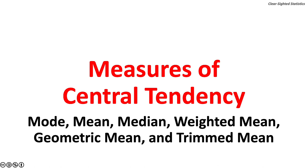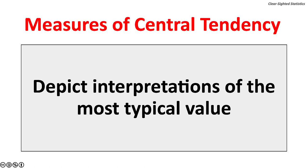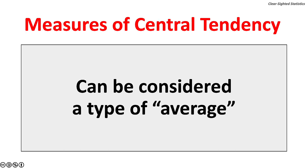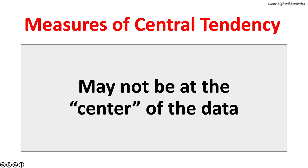Let's turn to the six basic measures of central tendency: the mode, mean, median, weighted mean, geometric mean, and trimmed mean. Measures of central tendency depict interpretations of the most typical or central value. All measures of central tendency can be considered a type of average. The value of some measures of central tendency may not be at the center of the data.